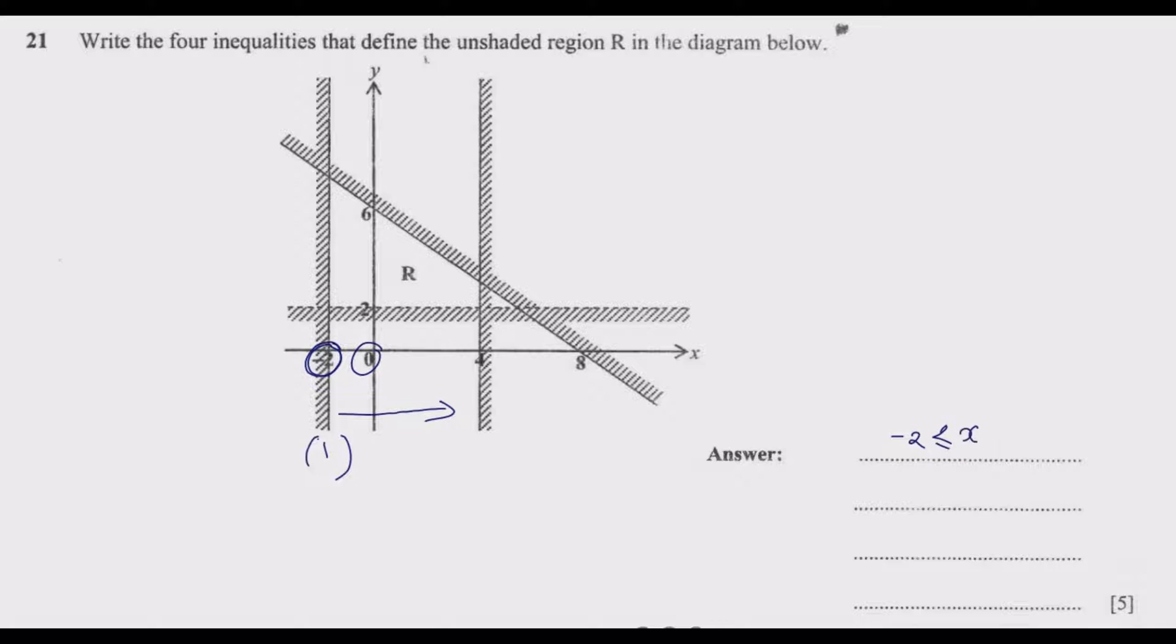This tells us we are looking at the region X is greater or equal to negative 2. Along this line, the value of X remains negative 2 and we want the values that are greater than negative 2. That's the first one.